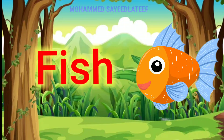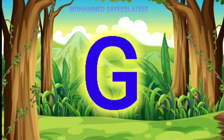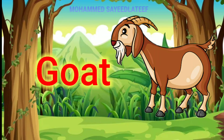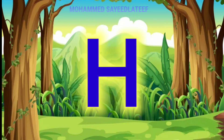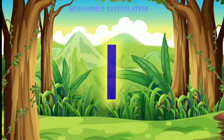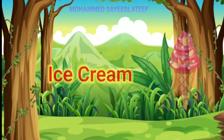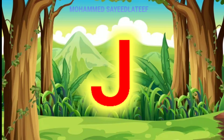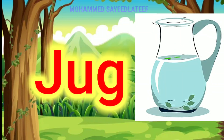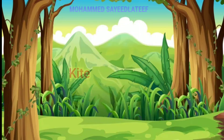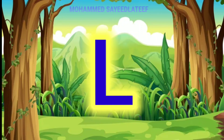F for fish, G for goat, H for hen, I for ice cream, J for jug, K for kite.